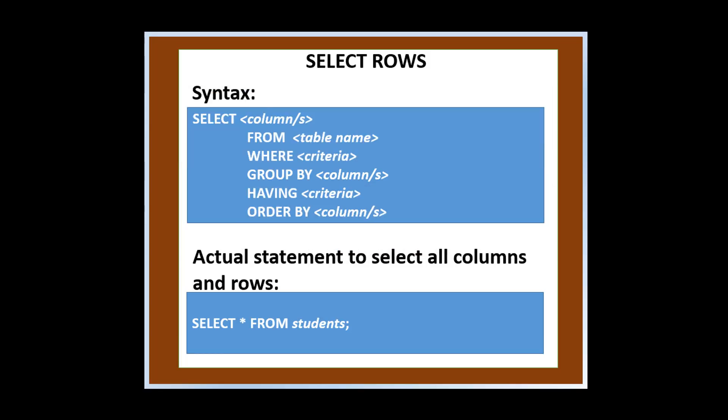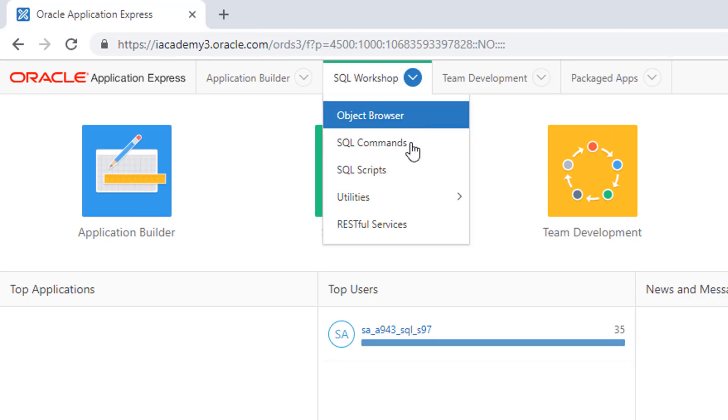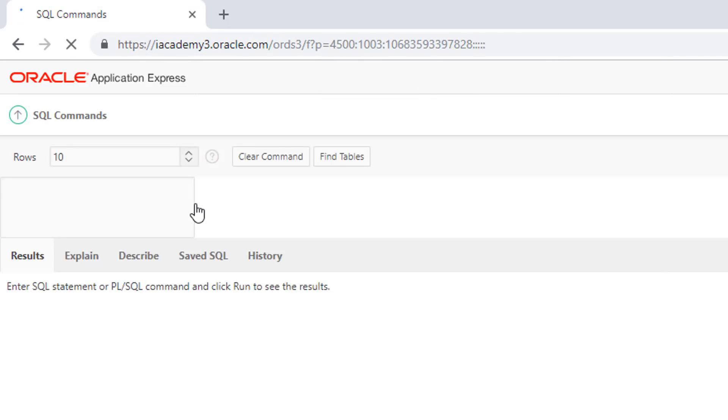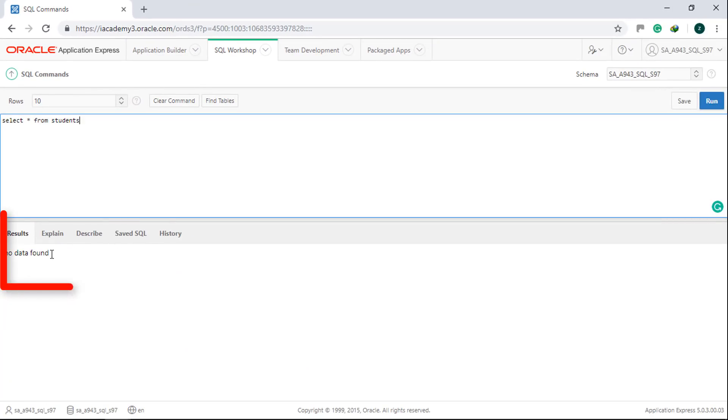Its syntax has several phases, but the ones that are important for us now are select and from. So, if you want to see all columns and all rows in a student table, the statement is select star from students. Click run. The result is no data found since we have not yet inserted any record in the table.